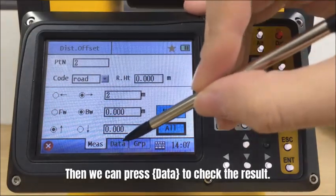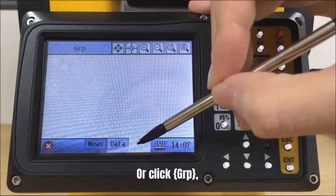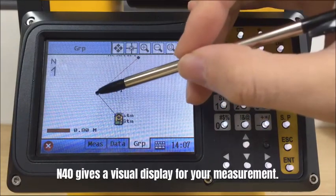Then we can press data tab to check the result. Or click graph tab, which gives a visual display for your measurement.